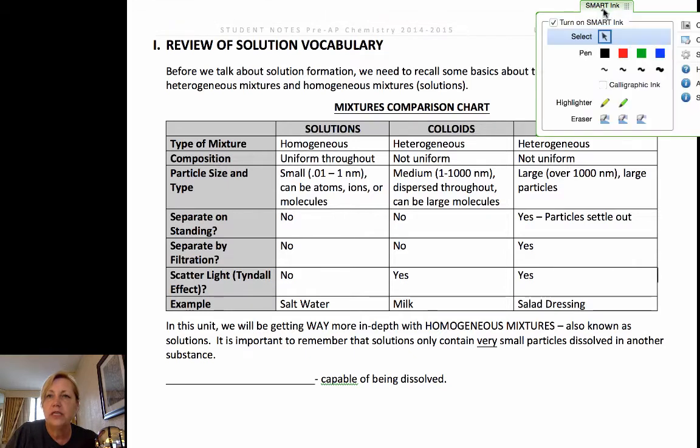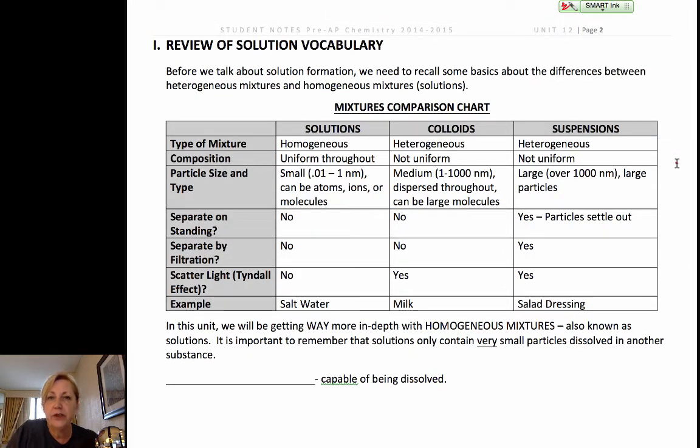Last semester we focused on mixtures, and when we talked about mixtures, we talked about the three kinds of mixtures. We talked about solutions, colloids, and suspensions. And the key differentiation is this uniformity and the size of the particles. Suspensions are the largest, so the particles will settle out upon standing, and they can be separated by filtration.